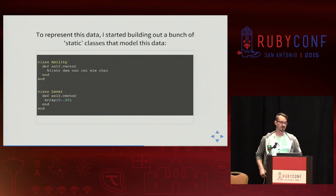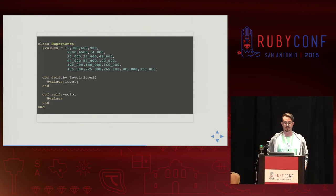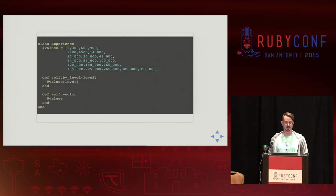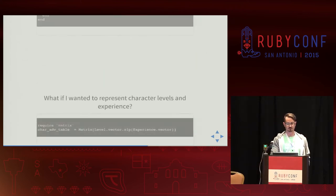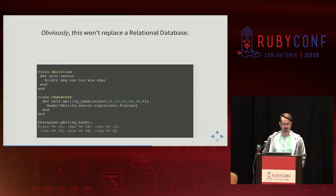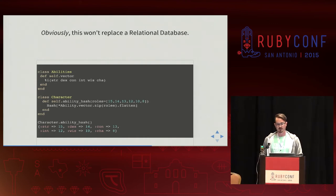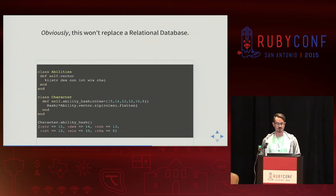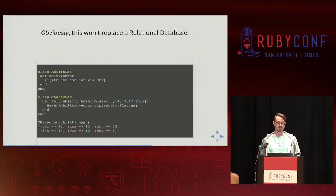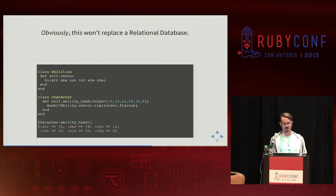Same thing with level — a level is really just a vector from zero to 20. And for experience points, I didn't want to work backwards and figure out the math around experience levels, so I just put it in a lookup list and vectorized that. Given those classes, I can build my character advancement table by zipping up my level vector and my experience vector, and it becomes really easy to refer to later on. This little code snippet shows a method I built for the character class: given ability score rolls, zip them up into a key-value pair and now you have your ability scores.